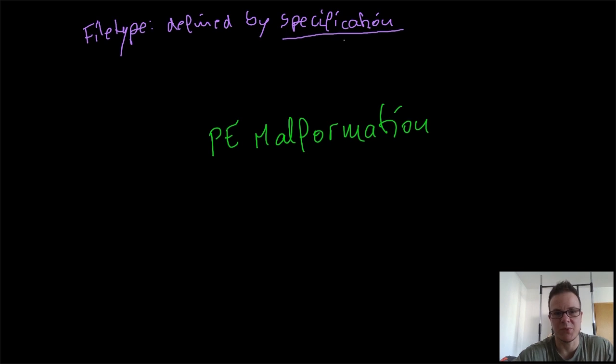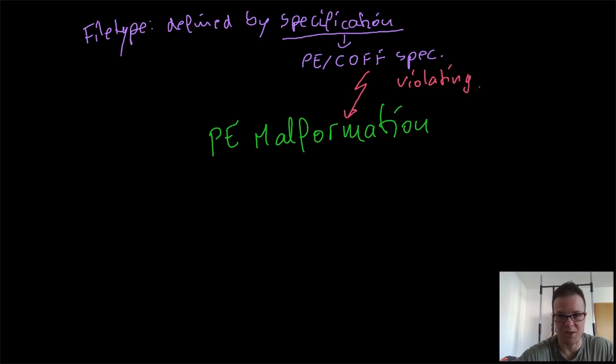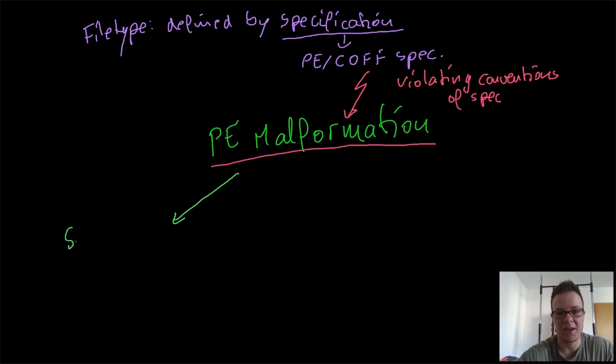So what is a PE malformation? Well, every file type is specified or defined by a specification, and in case of the portable executable format, this is the PE COFF specification, or portable executable common object file format specification. If the rules in this specification are violated, then we have a malformation.